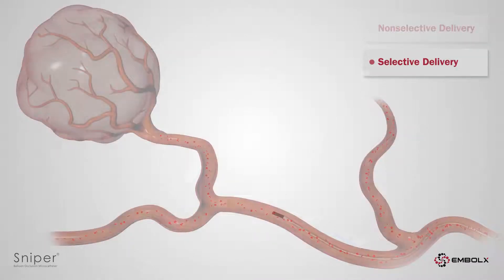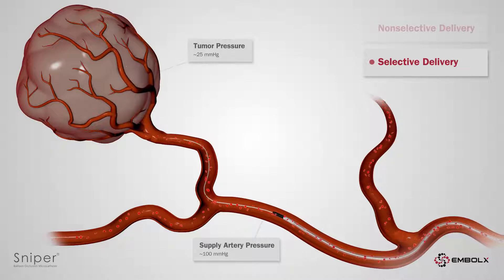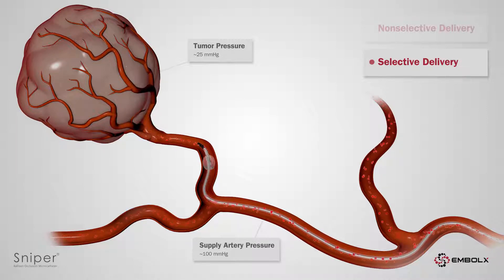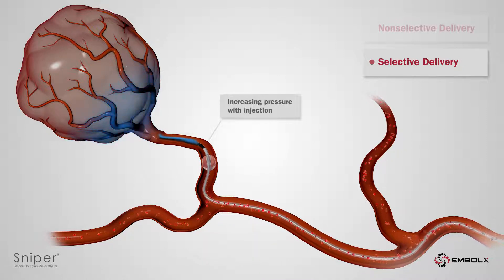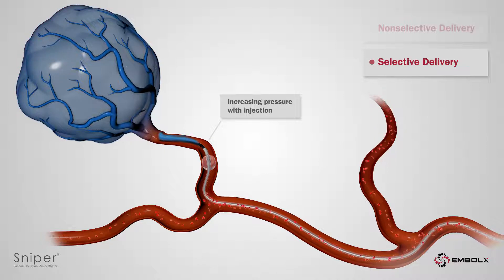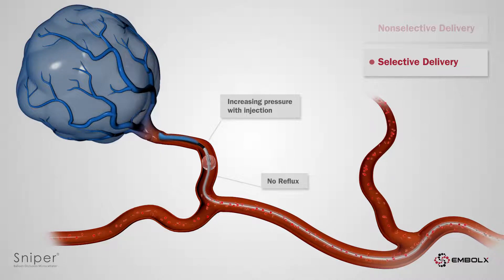In selective delivery, the Sniper is advanced to a distal location where the tumor is isolated. When the balloon is inflated and the supply artery is occluded, embolic agents are injected. As embolization progresses, increasing pressure enables embolic agents to penetrate into the tumor, causing the tumor to fill completely without reflux.